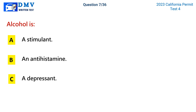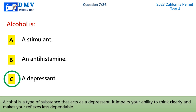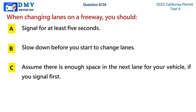Question 7: Alcohol is. A) a stimulant, B) an antihistamine, C) a depressant. The correct answer is C, a depressant. Alcohol is a type of substance that acts as a depressant — it impairs your ability to think clearly and makes your reflexes less dependable.